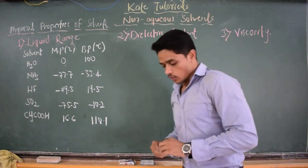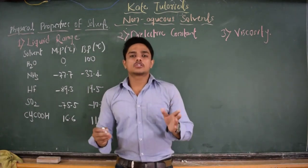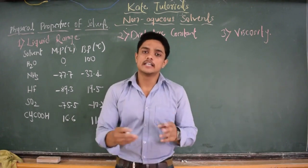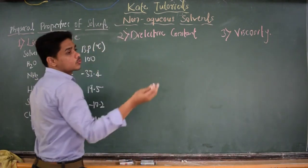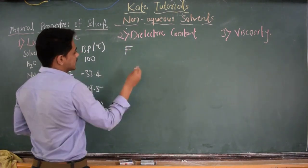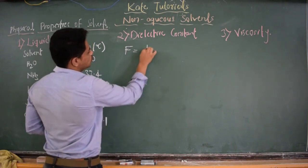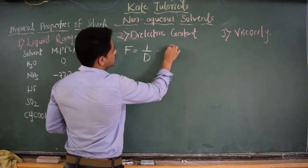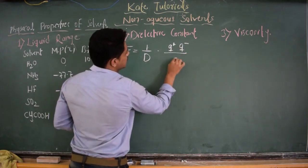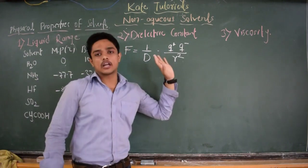And dielectric constant — what is dielectric constant? Dielectric constant is nothing but the ability of the solvent to separate the solute. From Coulomb's law of attraction, we know that F is equal to 1 over D, multiplied by the charge of cation times the charge of anion, whole divided by R squared — the distance between cation and anion.